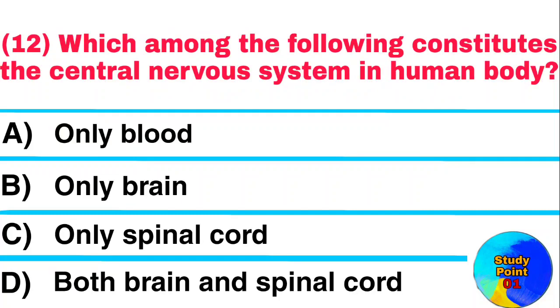Question: Which among the following constitutes the central nervous system in the human body? Answer: Both brain and spinal cord.